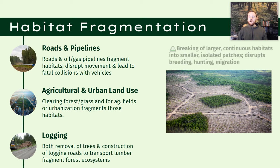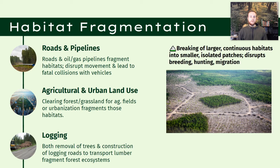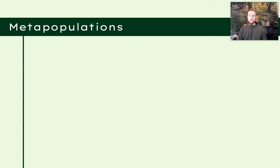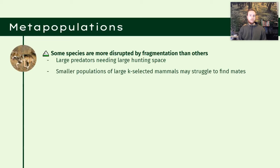So what are the consequences of fragmentation? Large, continuous habitats are now broken up, which disrupts animal movement, disrupts hunting especially for large predators, and may even disrupt breeding if organisms have a harder time finding mates. Certain species are far more disrupted than others — large predators who need a large range to hunt for prey and K-selected organisms with smaller population sizes are disproportionately impacted by fragmentation.